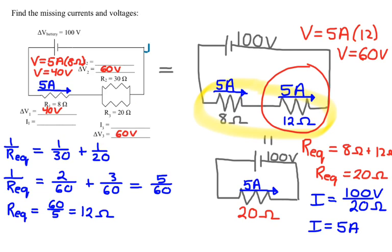So for I2, I could do 60 volts over 30 ohms and that would give me 2 amperes. So I know this current is 2 amps. And then I could do the same thing for I3. So 60 volts over 20 ohms means that I3 would be equal to 3 amps.